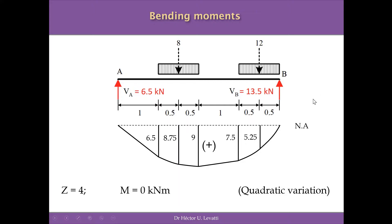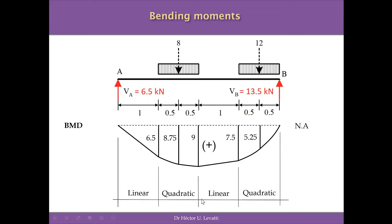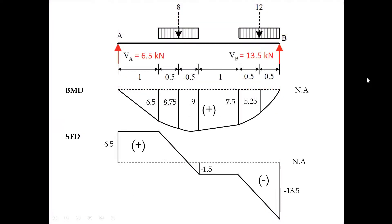We have finished sketching the bending moment diagram. To summarize: the distribution is linear in the first interval, quadratic under the first UDL, linear between the two UDLs, and quadratic under the second UDL. We now have a complete diagram of reactions, bending moments, and shear forces, and we ask: where is the maximum moment? This is relevant for calculating bending stresses in the future.